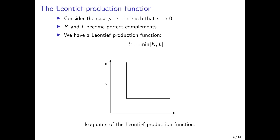The isoquants in this case have a right angle — two straight lines, one horizontal and one vertical. This means we cannot substitute capital by labor and vice versa. If we want to produce a certain level of output and let L increase, that does not increase output at all; if we let K increase, the same is true. We simply cannot substitute the two production factors.